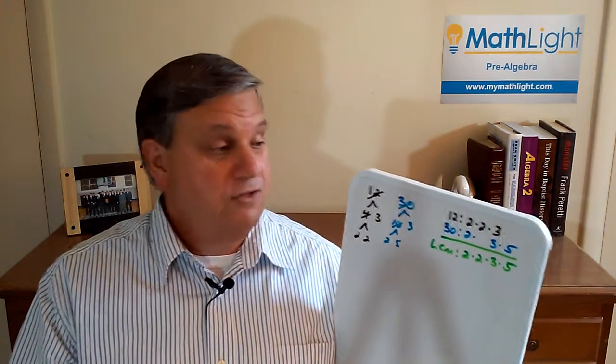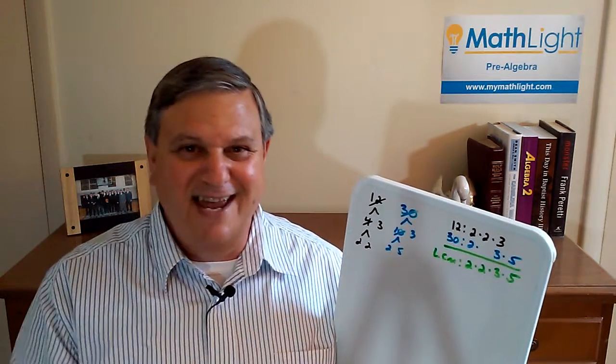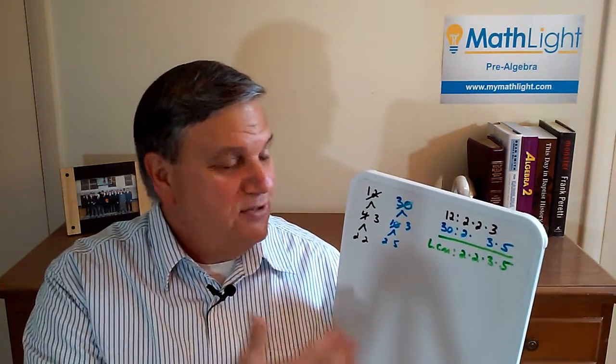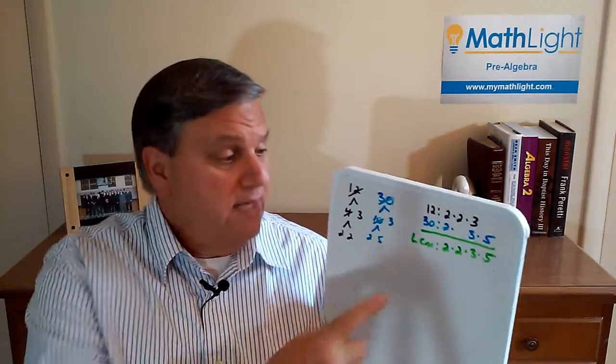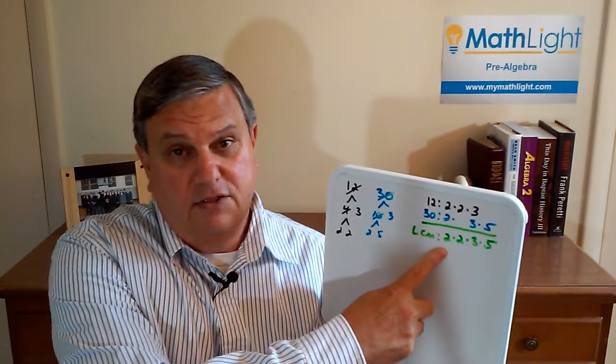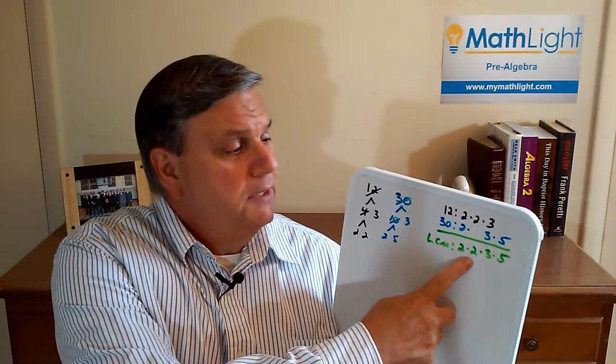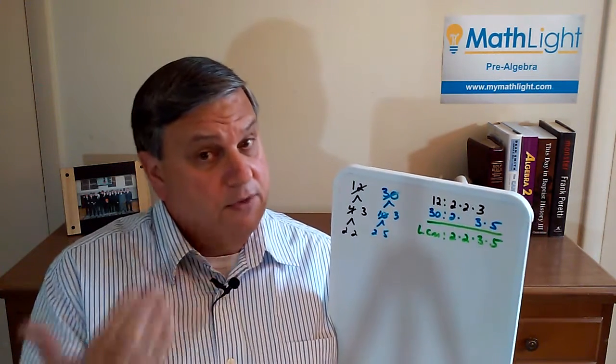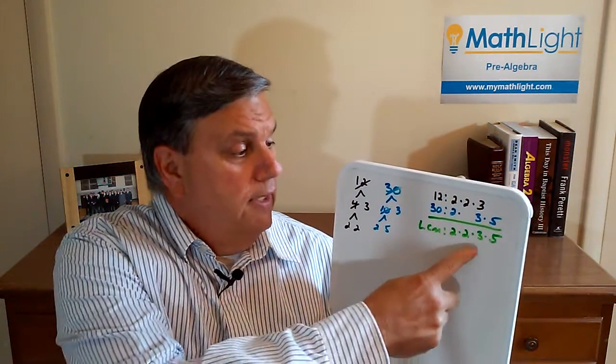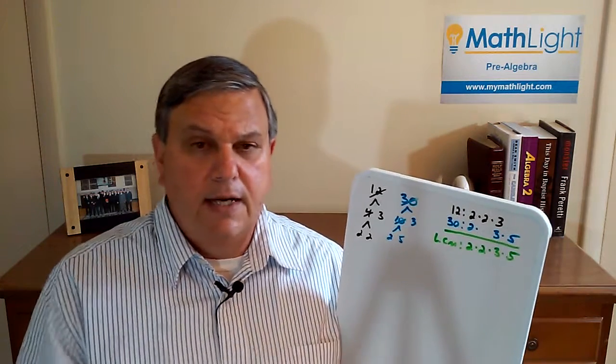So we understand the answer here. The LCM is—and I tell my students this—union means every column gets represented with its factor. So I need a two for that first two column, I need a two for that second two column even though there's only one in it. There is a two column there and we need a two for it. I need a three for the three column and I need a five for the five column.